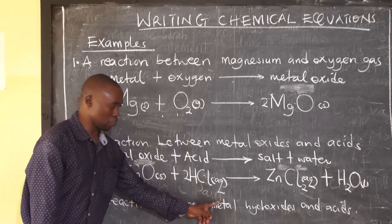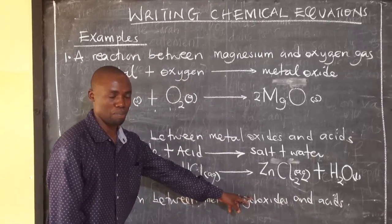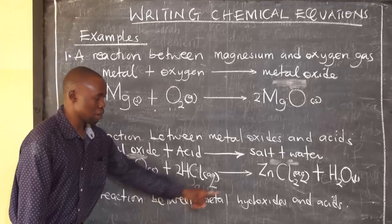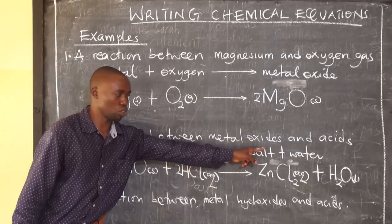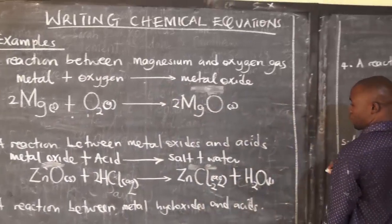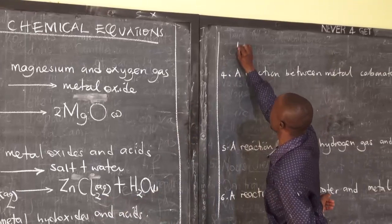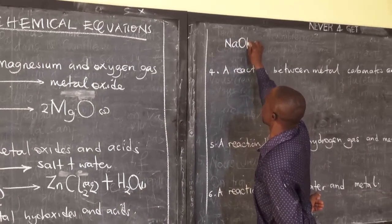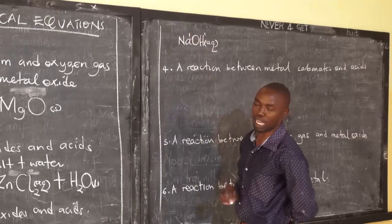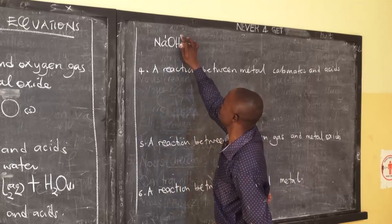We now have metal hydroxide plus an acid. A metal hydroxide is also an example of a base, so it will be similar: metal hydroxide plus an acid must give a salt and water only. We can take an example of sodium hydroxide. The valence of hydroxide is 1 and the valence of sodium is also 1, so we receive the formula NaOH — the formula remains like that.